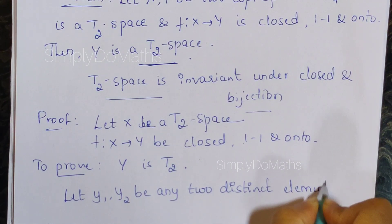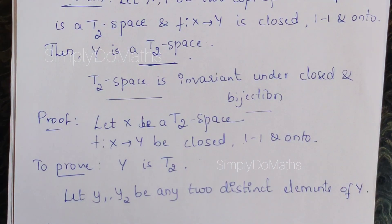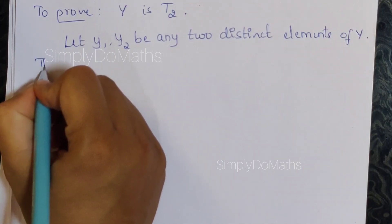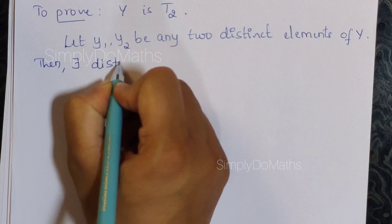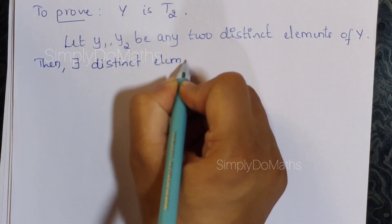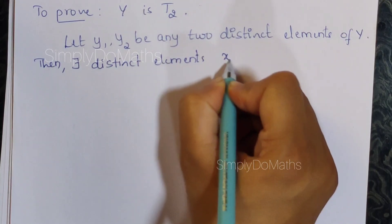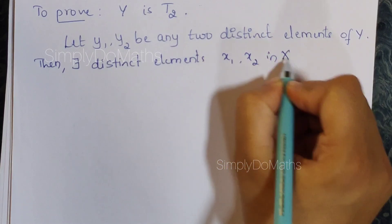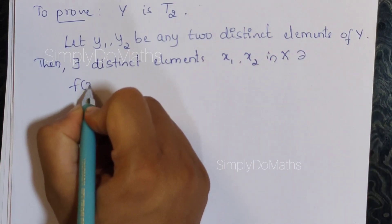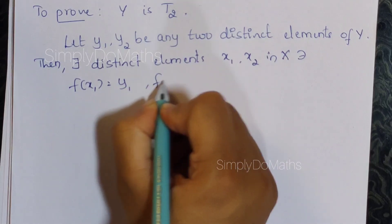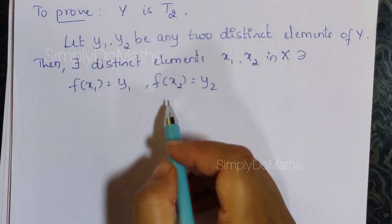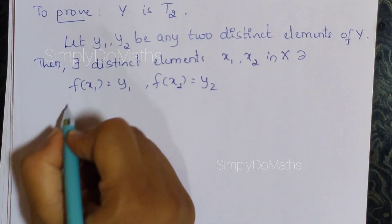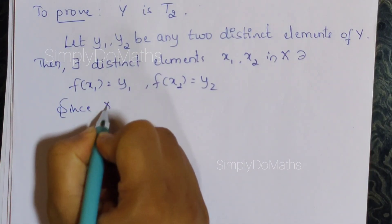Since y1 and y2 are elements of capital Y, there exist distinct elements x1 and x2 in capital X such that f(x1) = y1 and f(x2) = y2, because this is by the definition of a one-one and onto function. As we know, X is a T2 space.